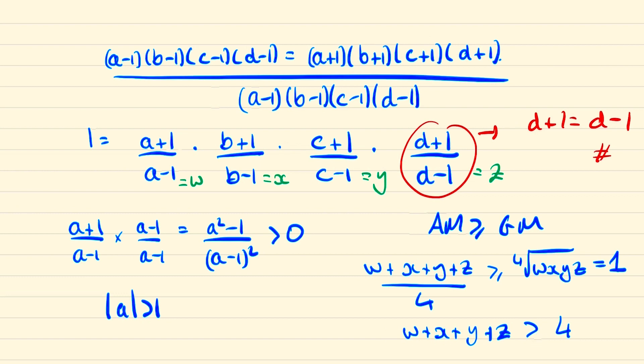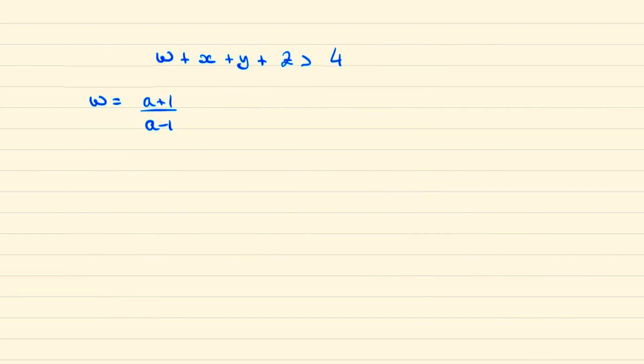So what we can do next is look at the expression a plus one over a minus one. By writing this as a minus one plus two over a minus one, then this is a minus one over a minus one plus two over a minus one, or one plus two over a minus one. We can apply the same to x, y and z in terms of b, c and d respectively.